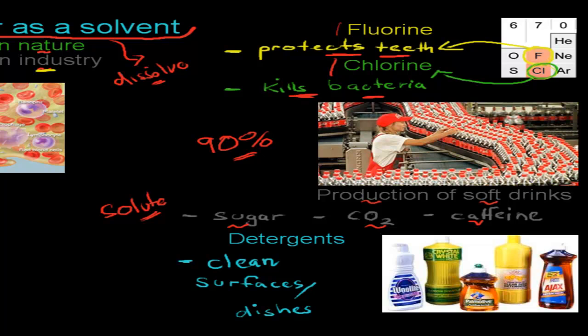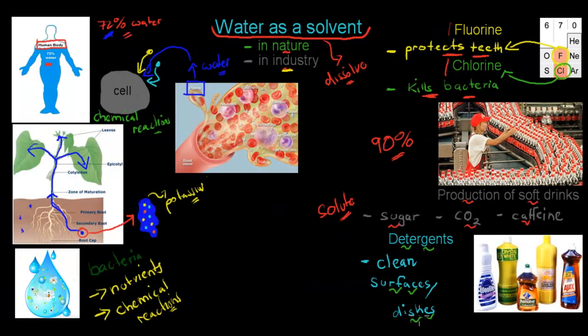Another one that we can use in the industry would be something called detergents. And detergents are there to clean products. So for example, detergents can clean surfaces like your bathroom or your kitchen, but they can also help clean dishes because detergents dissolve in water and thereby stick to different surfaces and dishes and then clean them as a result.